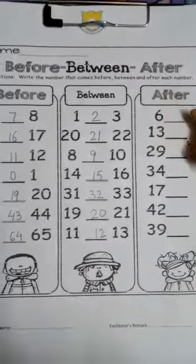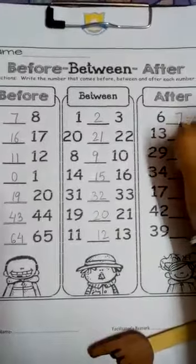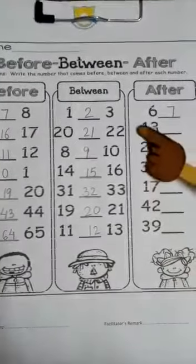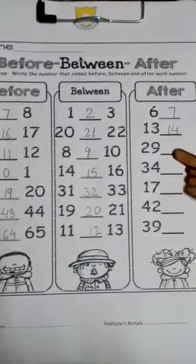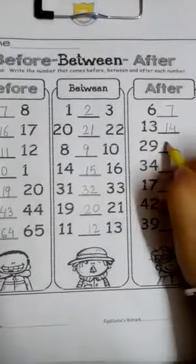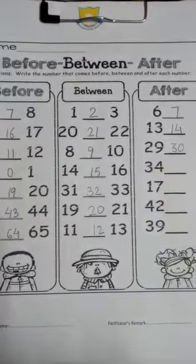So now let's see the after numbers. What comes after 6? Yes, 7. What comes after 13? Yes, you write 14. What comes after 29? Yes, 30. What comes after 34? Yes, 35.